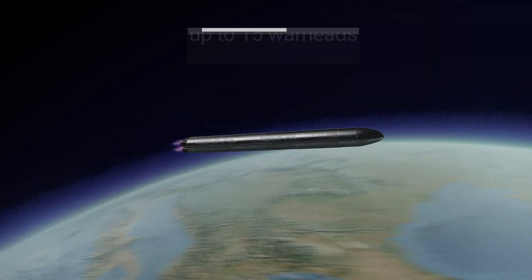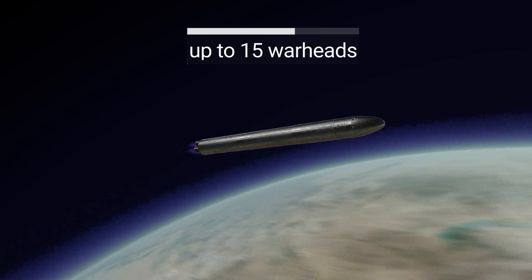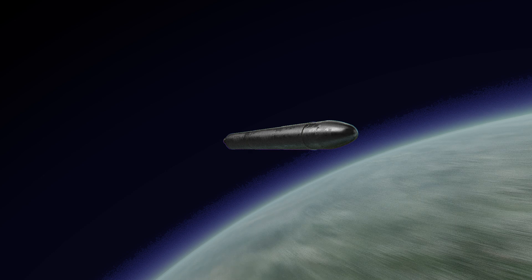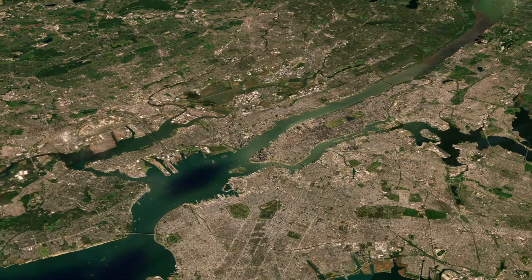The exact number of warheads is classified, but there is information that the missile can carry on board up to 15 warheads with a power of 750 KT each. If that many landed on New York, it would look like this.